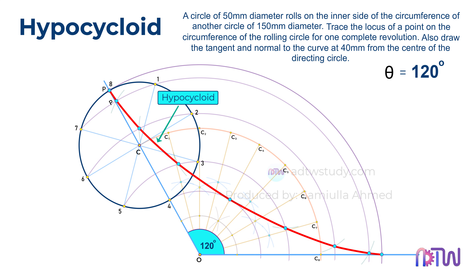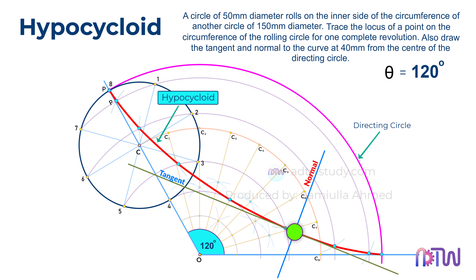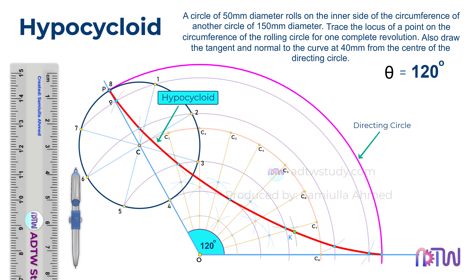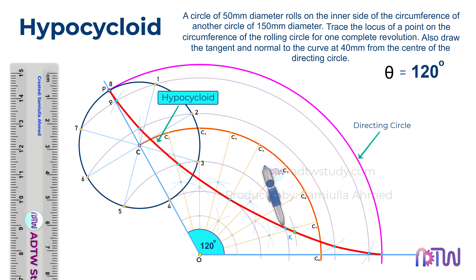This is the required hypocycloid. Next, we need to draw a normal and a tangent at a point 40 millimeters distance from the center of the directing circle. Here, this circle is the directing circle. We need to draw a normal and tangent to the curve at a point 40 millimeters distance from the center. To do so, take a compass, adjust it to 40 millimeters distance as shown, and using this center point O as a center, cut the arc on the curve. Label this point as K. After this, adjust the compass to the radius of the rolling circle as shown, and using this point K as the center, cut the arc on this center line as shown. Label this point as N.